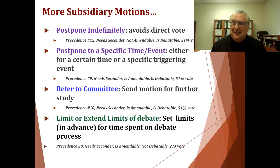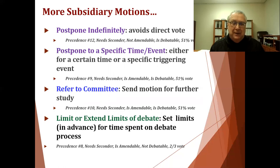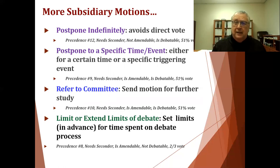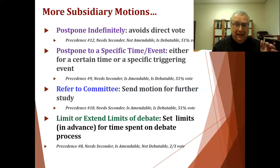One of my favorites is the motion to postpone indefinitely. It requires a seconder, is not amendable, is debatable, and requires 51% to pass. It's useful when there's a very controversial issue that's going to tear apart the organization. Even though one side might win versus the other, everyone's going to lose. So you make a motion to postpone indefinitely, and if successful, the matter goes away — it's postponed indefinitely and it's never going to come back.